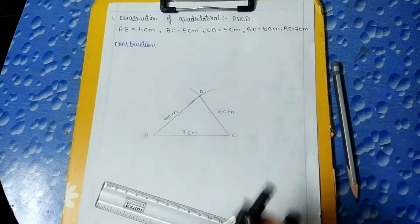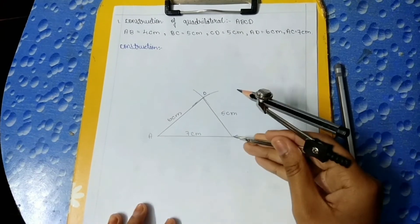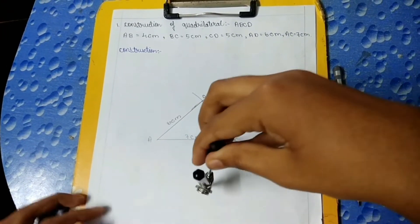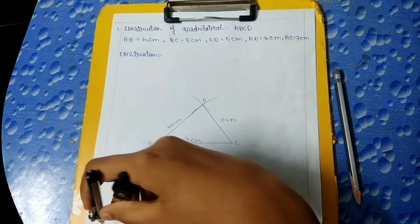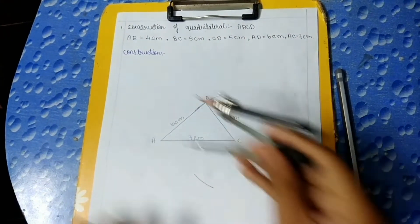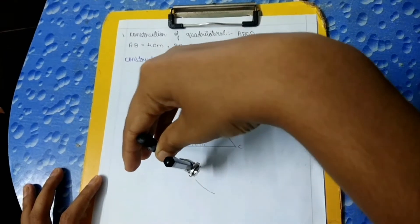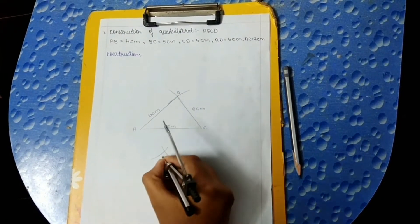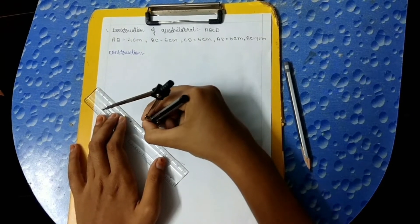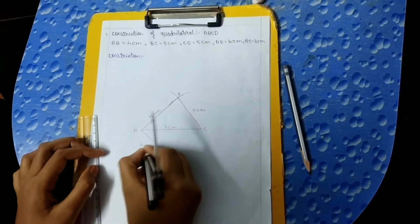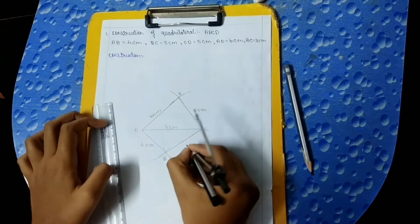Now with the help of the compass, we should draw an arc of 5 cm and keep the compass on point C and draw an arc. Then we should take 4 cm, keep the compass on point A and draw an arc. This point we should name as B. We should draw a line from A to B — this is 4 cm — and a line from C to B — this is 5 cm.